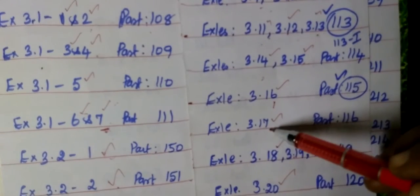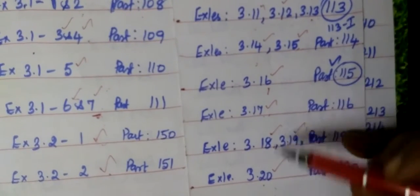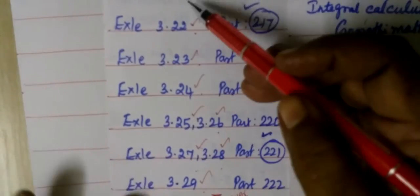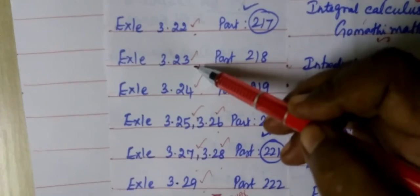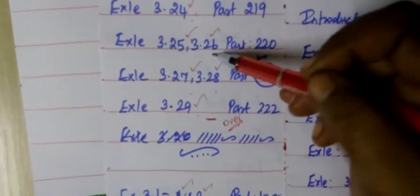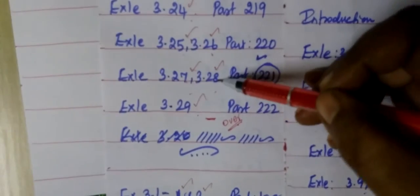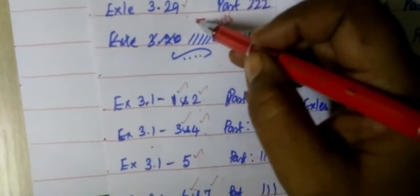Then what? 17, then 18, 19, then 20. Then next is 3.21, 22, 23, then 24, then 25, 26, then 27, 28, 29. So, after this example sums over.